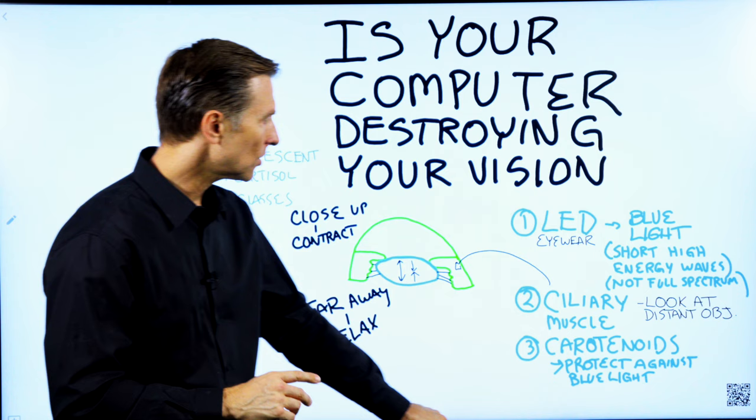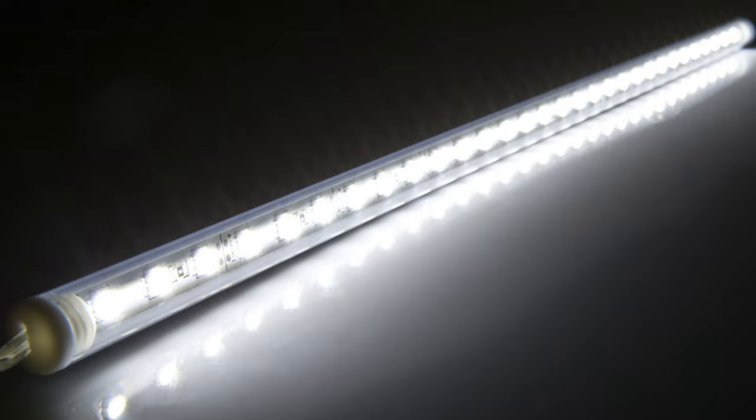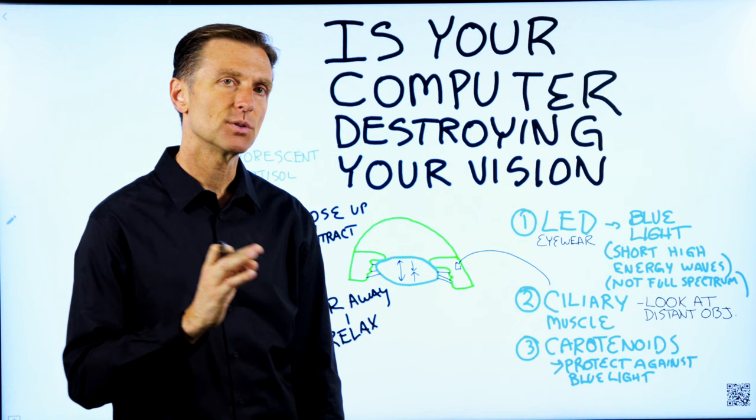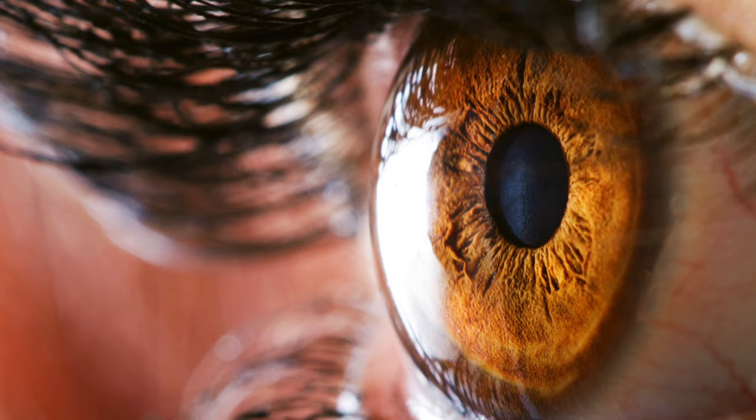One is the LED light. This artificial light is not full spectrum. It is very specific to a blue light, which is a short, high energy wave, which is very irritating to the eyes. And LED lights can actually raise cortisol. They add stress to the body.